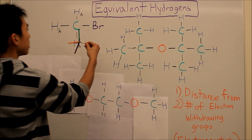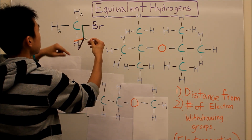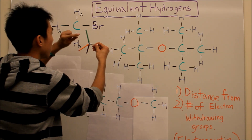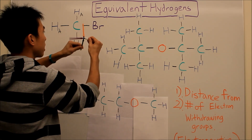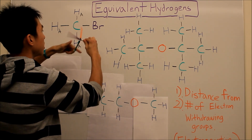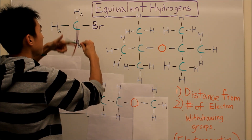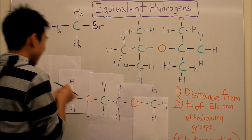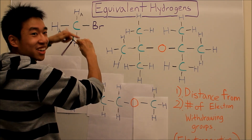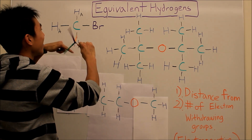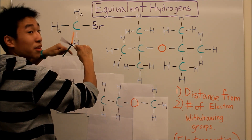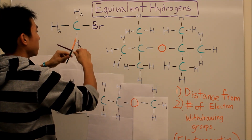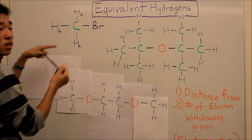So here's a model kit — these are the three hydrogens. Your molecule isn't always frozen; it's always rotating constantly. Because they're rotating, each hydrogen is going to be in the same environment as the others at some point in time. That's why all three of these hydrogens are equivalent.